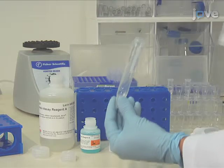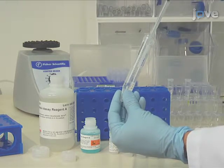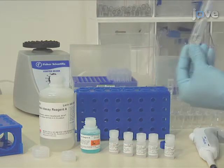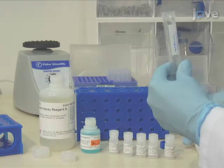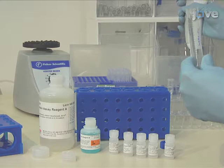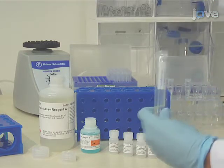Prepare enough fresh working reagent for the standards and samples to be measured, using a 50 to 1 ratio of reagent A to B. In this example, we will prepare 3 mL of working reagent to cover the reference, 5 standards, and 6 samples.